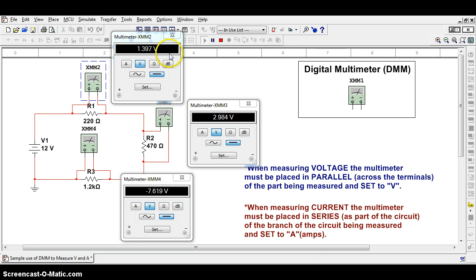Notice that my values for my voltage for my first resistor, 1.397 volts, 2.984 volts, and then the third resistor, I have a negative 7.619 volts.